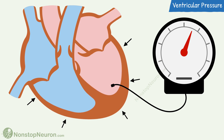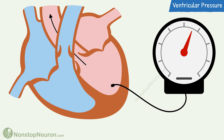The ventricles continue to contract and initially there is a rapid ejection of blood. During this, pressure rises and reaches the maximum. Then the ejection is slowed down, and during this the pressure falls. Now the semilunar valves close.